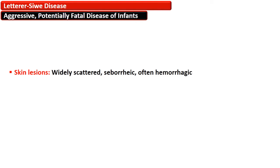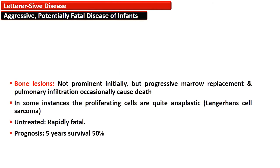Skin lesions are widely scattered with seborrheic and sometimes hemorrhagic lesions. Bone lesions are not prominent initially, but due to progressive marrow replacement and pulmonary infiltration, this causes death. In some instances the proliferating cells are quite anaplastic, and these cases are termed Langerhans cell sarcoma. Untreated Letterer-Siwe disease is rapidly fatal, and if treated, prognosis is 50% for 5 years.